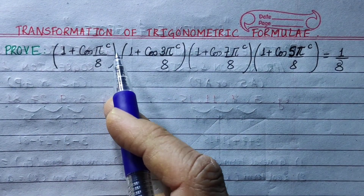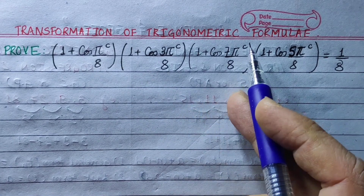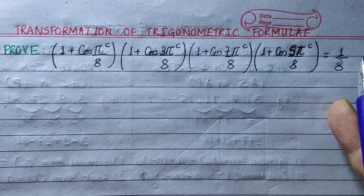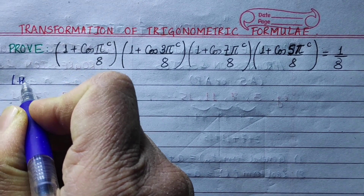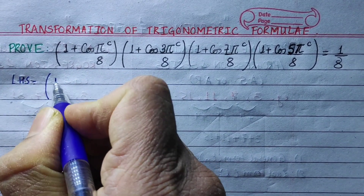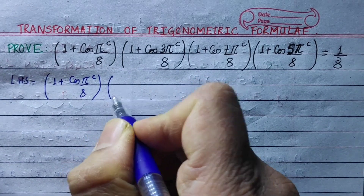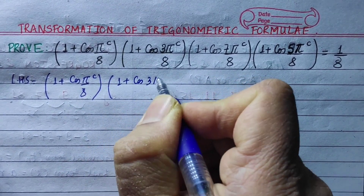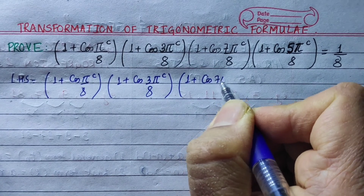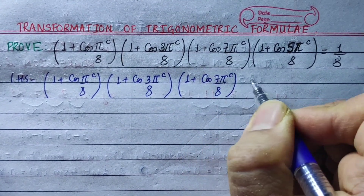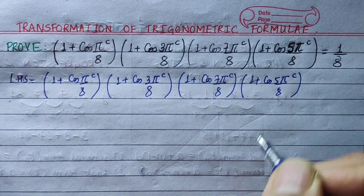Prove: (1 + cos(π/8)) × (1 + cos(3π/8)) × (1 + cos(7π/8)) × (1 + cos(5π/8)) equals 1/8.